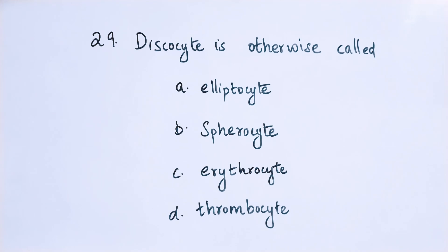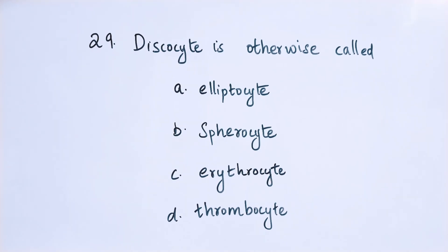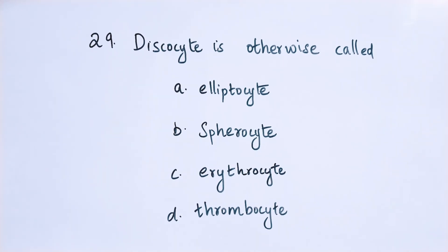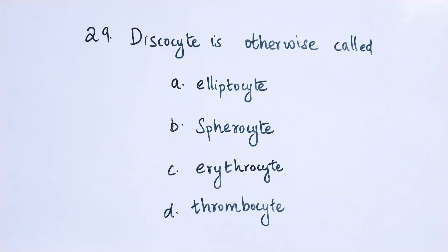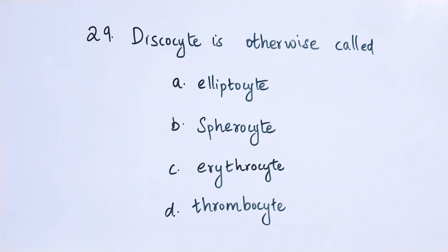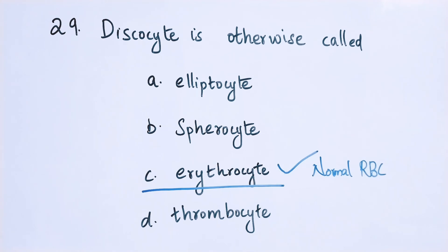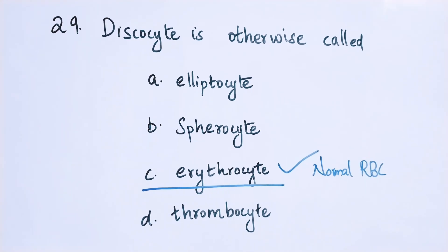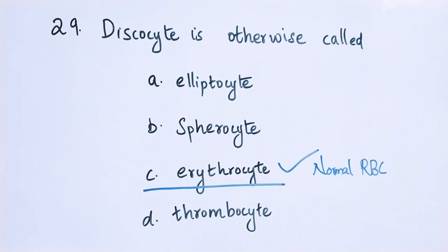Question number 29: Discocyte is otherwise called option A: elliptocyte, option B: spherocyte, option C: erythrocyte, option D: thrombocyte. The right answer is option C — erythrocyte. Discocyte is otherwise called erythrocyte; the normal RBC is a discocyte.